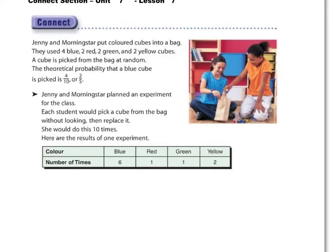Here is our situation. Jenny and Morningstar are putting colored cubes into a paper bag so we can't see through it. They used four blue, two red, two green, and two yellow cubes. A cube is picked from the bag at random. The theoretical probability that a blue cube is picked is four-tenths, or the equivalent fraction two-fifths — dividing both top and bottom by two.